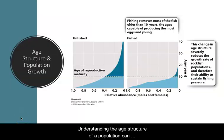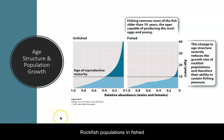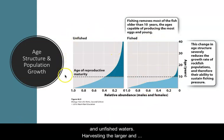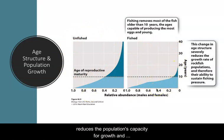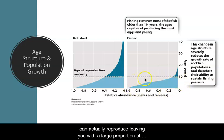Understanding the age structure of a population can be really important for things like commercial fisheries. This example shows the age structure in Pacific rockfish populations in fished and unfished waters. Harvesting the larger and older individuals reduces the population's capacity for growth and jeopardizes the stocks, because fishing targets these older individuals — the only ones that can actually reproduce — leaving a large proportion of individuals not of reproductive age.